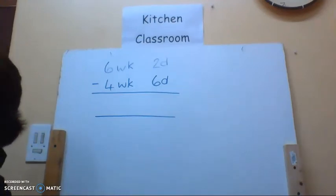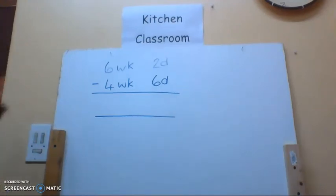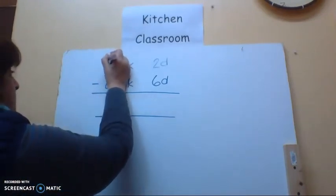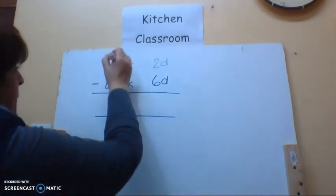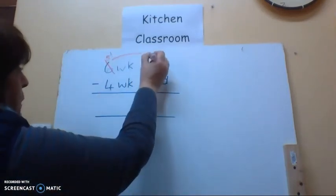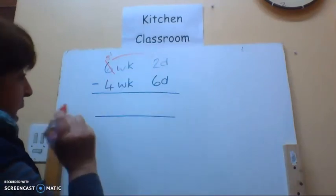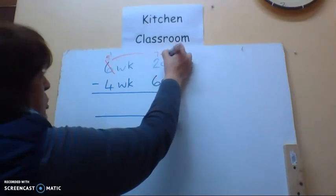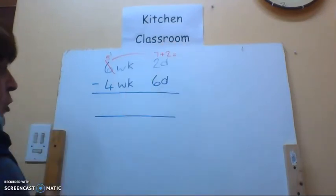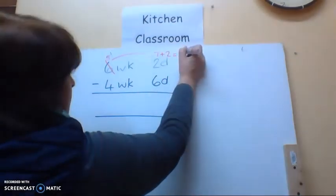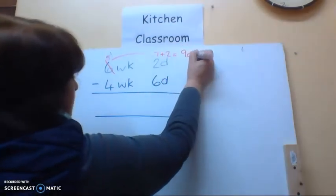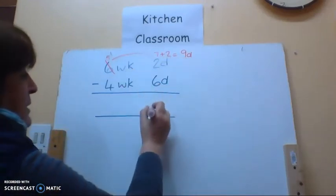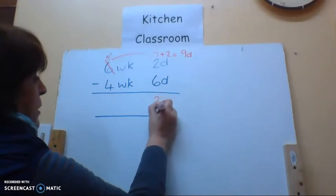So what I have to do is I have to go across to my week and I have to borrow a week and I'm going to leave him with five weeks. When I take my week back over, it changes and it's seven days plus the two days that I have got over there and I now have nine days. So now I can subtract. I can say nine days minus six days and that's going to leave me with three days.